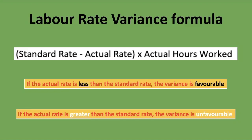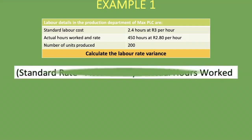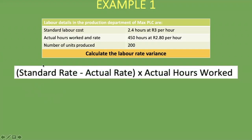Here is our first example. The labor details for Mets PLC show a standard labor cost of 2.4 hours at 3 rand per hour. The actual hours worked were 450 hours at 2 rand 80 per hour, with 200 units produced. We need to calculate the labor rate variance. The standard rate is 3 rand per hour.